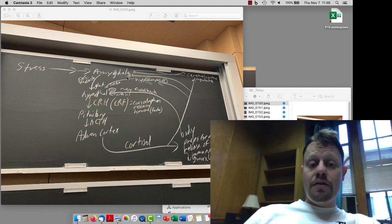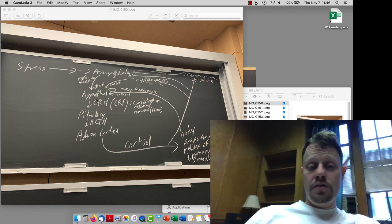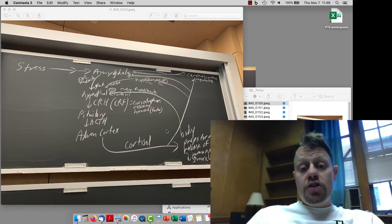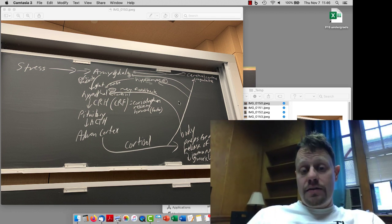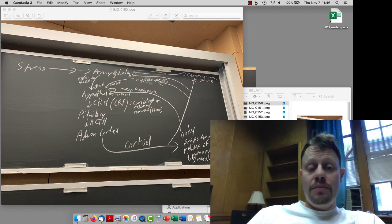And that happens by the cortisol exciting amygdala, which then will turn up more glutamate and more activation in the PVN of the hypothalamus. In addition, there's a second negative feedback system that goes through the hippocampus, where cortisol excites the hippocampus, and then the hippocampus inhibits the hypothalamus.